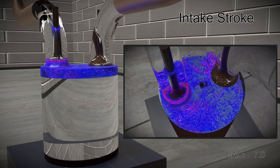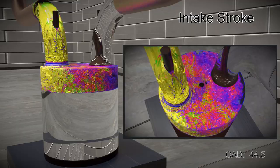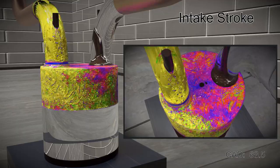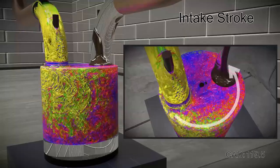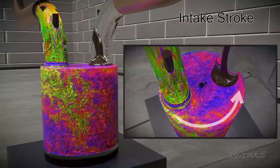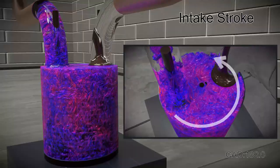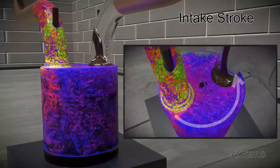During the intake stroke, atmospheric air enters the cylindrical chamber as the valve opens. The air quickly becomes turbulent. Despite the chaotic motion, the intake port and valve are carefully designed to produce large-scale, organized motion known as swirl, which helps maintain optimal engine efficiency.